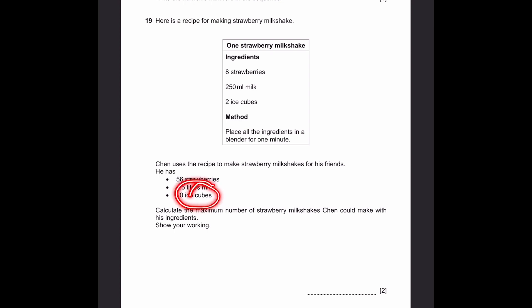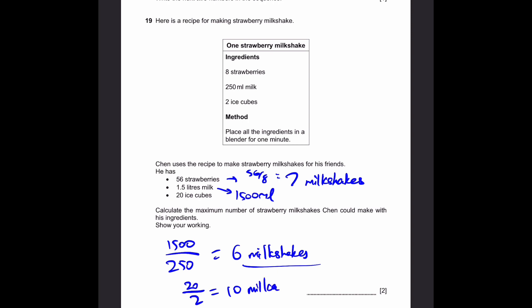So the maximum number, if he had unlimited milk and ice cubes, would be determined by strawberries: 56 by 8 which is 7 milkshakes. Now the boundary of milk: 1.5 liters is 1500 milliliters, we divide by the amount per person and that will be 6 milkshakes. Now 20 ice cubes divided by 2 per person is 10 milkshakes. Of these three, the lowest is 6. We want the lowest because if we have only 6 milkshakes possible using the milk we have, we obviously cannot make 7 milkshakes since there's not enough milk. So 6 milkshakes is the answer.